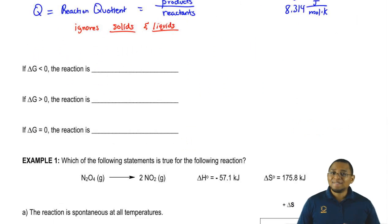If delta G under non-standard conditions is less than zero, then our reaction is spontaneous. If it's greater than zero, then it's non-spontaneous. If it's equal to zero, then our reaction is at equilibrium.